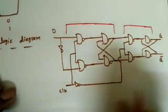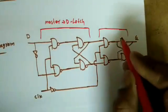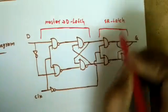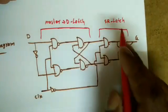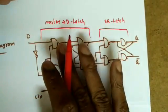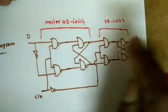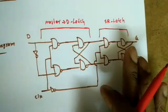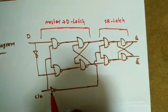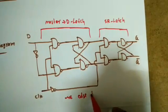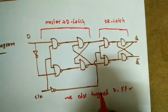Looking at the internal logic diagram: the master is a D latch but implemented as an SR latch — the D input goes to S and D-bar goes to R. The slave is also an SR latch. This combination forms the complete master-slave D flip-flop. With only one inverter in the clock path this is a negative edge-triggered D flip-flop; adding one more inverter makes it a positive edge-triggered D flip-flop.